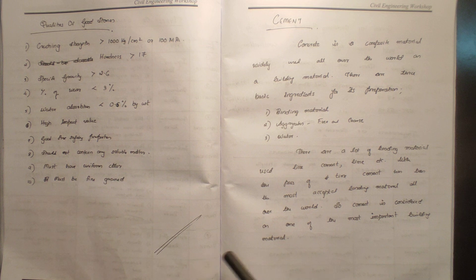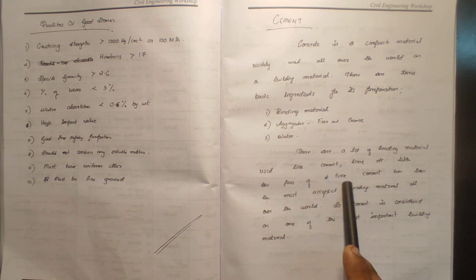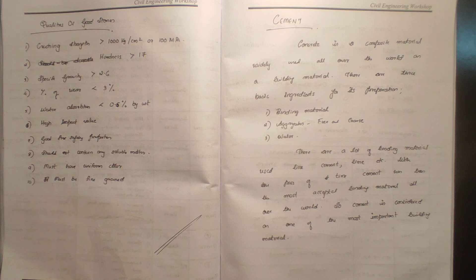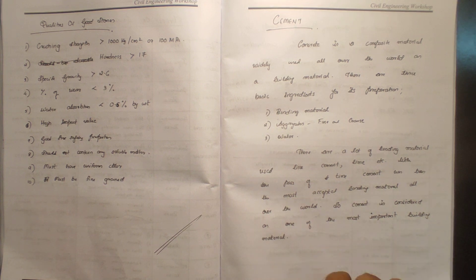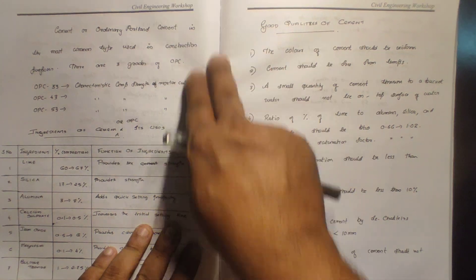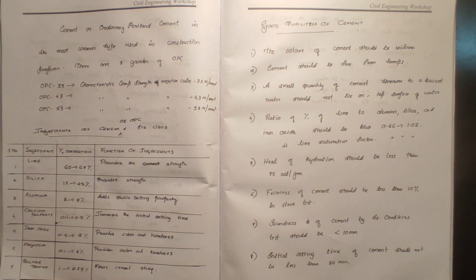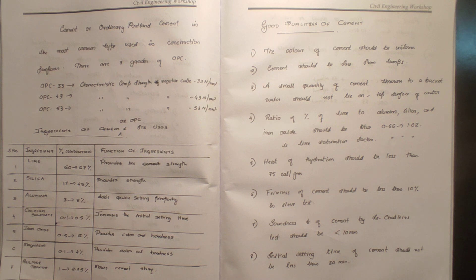There are three kinds of concrete materials. There are a lot of binding materials, but over time cement has been the most accepted building material all over the world, so cement is considered one of the most important building materials and the most common type used in construction.